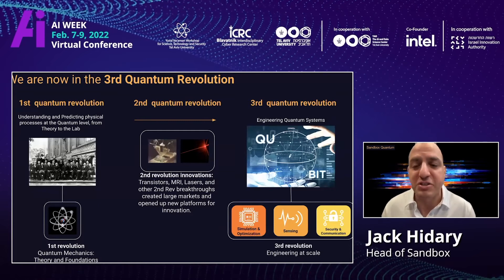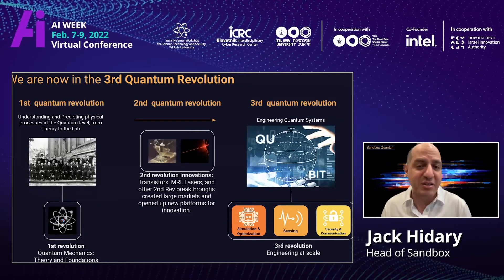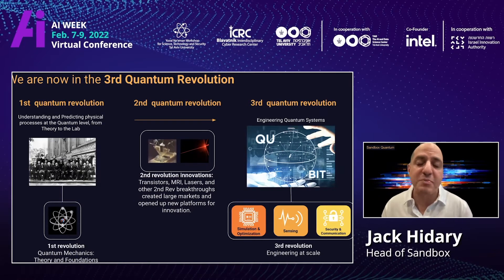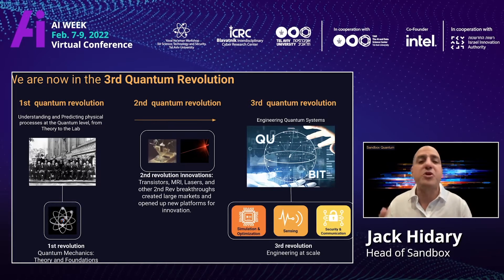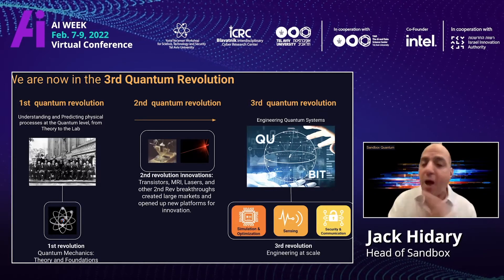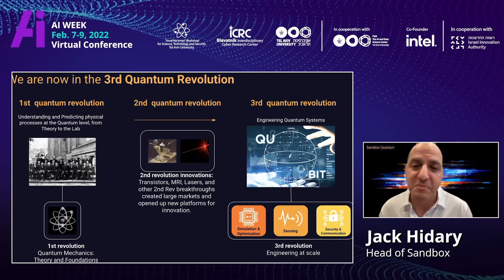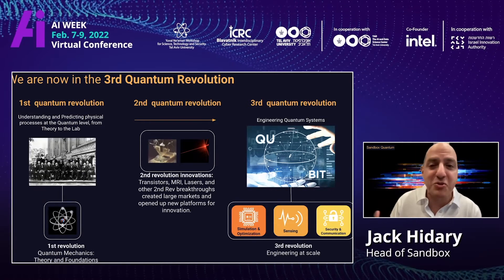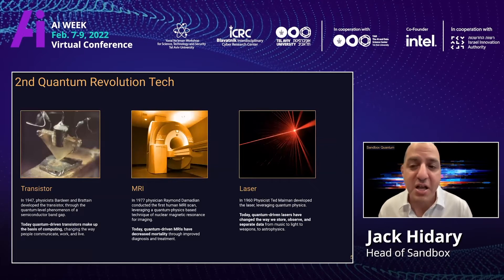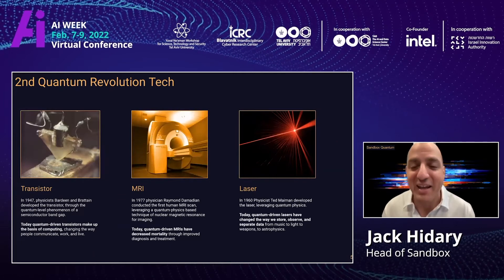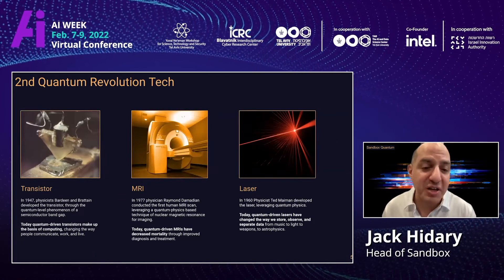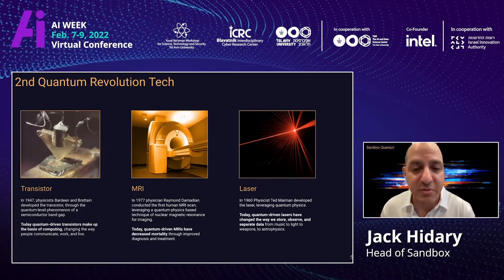The first quantum revolution was the years 1900 to 1935. This is when about 30 individuals developed quantum mechanics itself, which gave us a very new view on the world — a view that was not deterministic like the Newtonian world, but probabilistic in the quantum world. Their students and the students of those students then created the second quantum revolution, an applied revolution, creating the transistor itself, without which we could not have this virtual conference today. The MRI machine, the laser — all created using quantum physics.